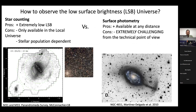These faint structures have been very hard to observe. Interestingly, because they are quite relaxed with long dynamical timescales, there isn't much going on once they formed — meaning results of early processes in the universe survive longer and evolution is slower. So it's important to study all these faint structures, but you need deep imaging, and that comes with its problems. There are two main approaches to observing the low surface brightness universe: star counting and surface photometry.